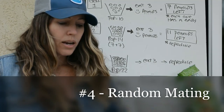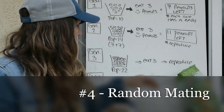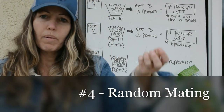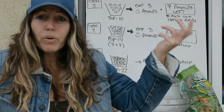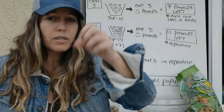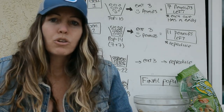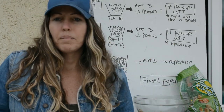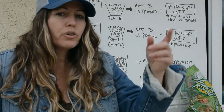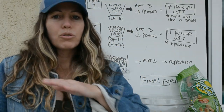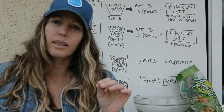Number four is random mating. When I was grabbing babies out of the bucket into the new population, I was just randomly grabbing them — they were randomly mating with whoever. No sexual selection is occurring; it's just random. That allows the genetics in the population to stay the same.